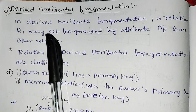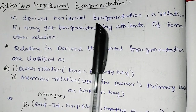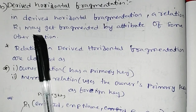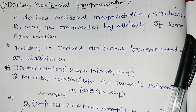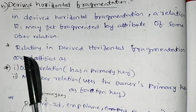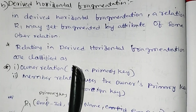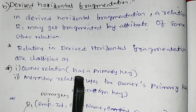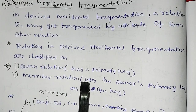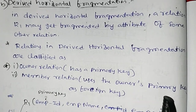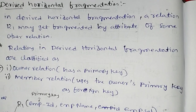The second type is derived horizontal fragmentation. In derived horizontal fragmentation, a relation R1 may get fragmented by attributes of some other relation. Relations in derived horizontal fragmentation are classified as owner relation, which has the primary key, and member relation, which uses the owner's primary key as a foreign key.